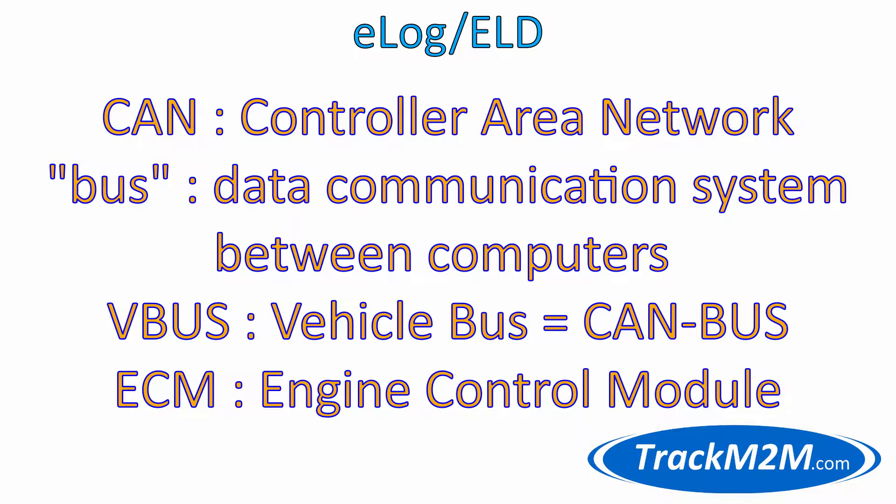VBUS: Vehicle bus, also known as CAN bus, refers to the controller area network bus on a vehicle. ECM: Engine control module. This is the main computer on a vehicle that controls engine and drivetrain functions.